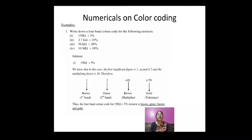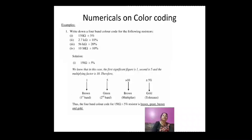Now numericals on color coding. First numerical: 150 ohms ±5%. Here 1 indicates brown, 5 indicates green, and the multiplier is ×10 (brown band), so 15 × 10 = 150 ohms. And ±5% means the tolerance band is gold. So the color bands for a 150 ohm ±5% resistor are: brown, green, brown, gold.